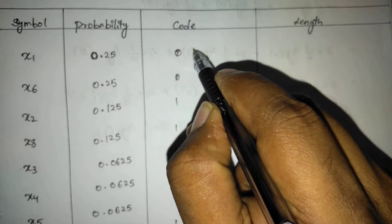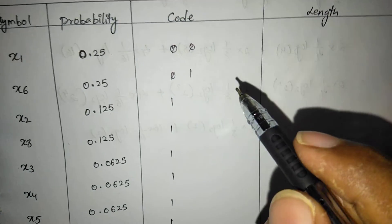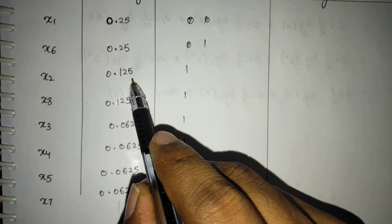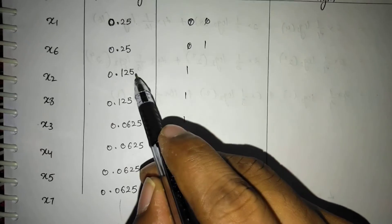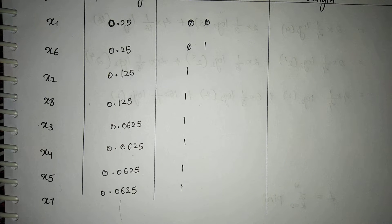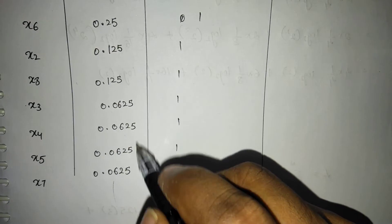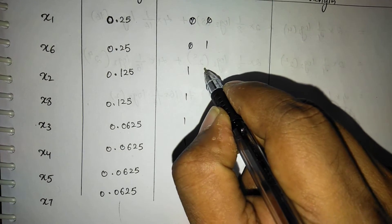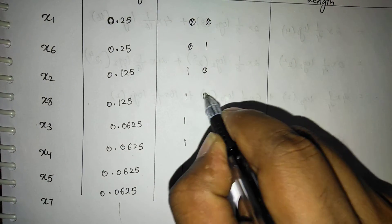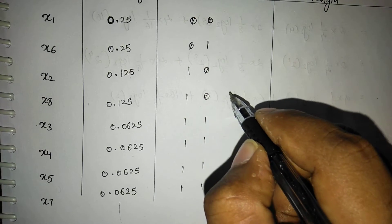We assign 0 and 1 to the first division. Next, within the lower group: 0.125 plus 0.125 equals 0.25, and adding the four 0.0625 values also gives 0.25 — again equal probability. We assign 0 to the upper sub-group and 1 to all remaining, then within each sub-group we assign 0 and 1 to the top priority.